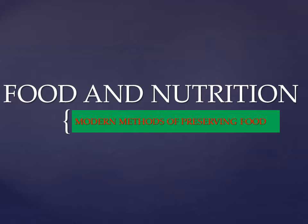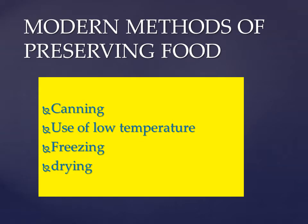Pupils, examples of the modern methods of preserving food are canning, use of low temperature, freezing, and drying.